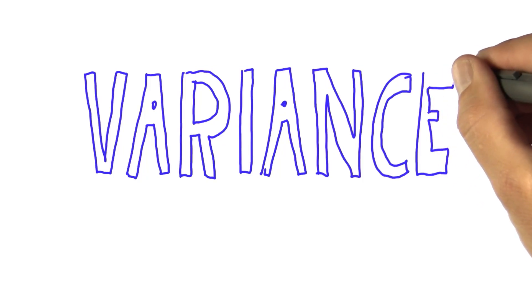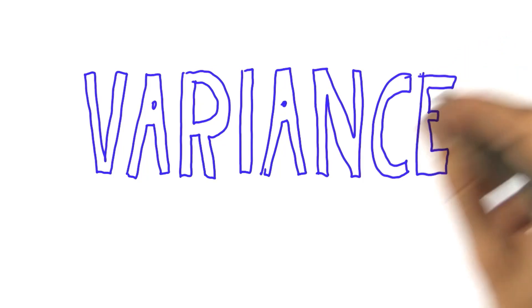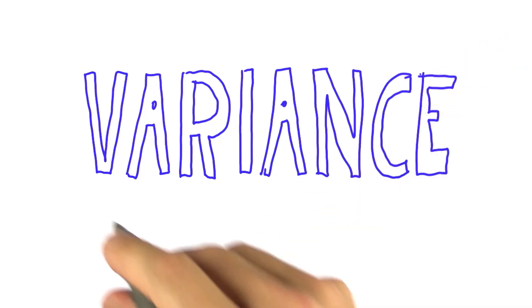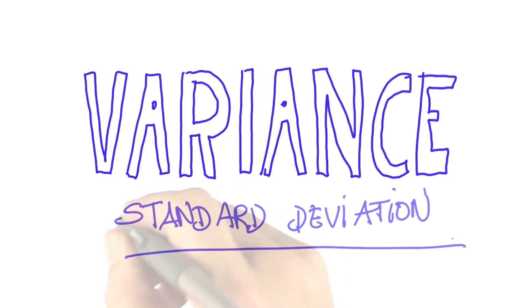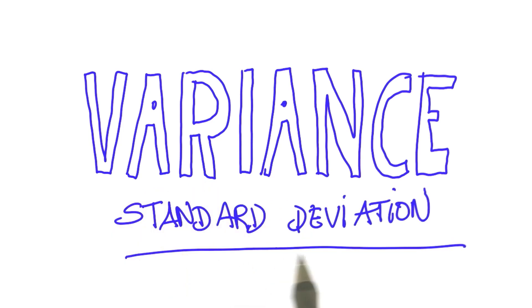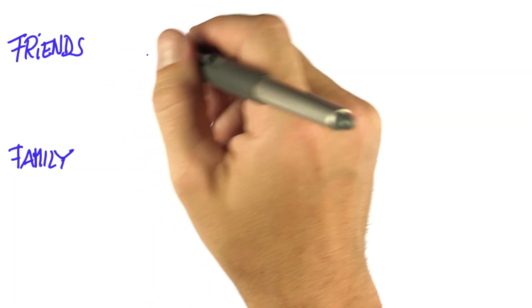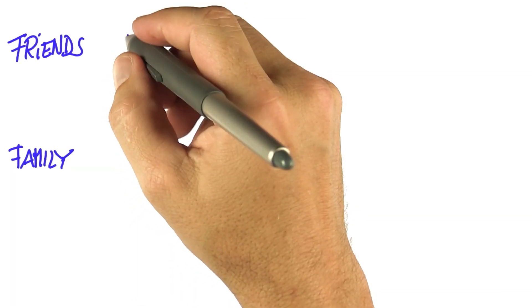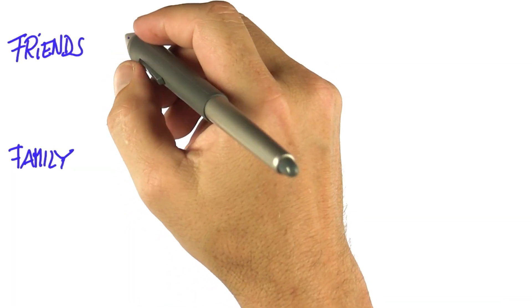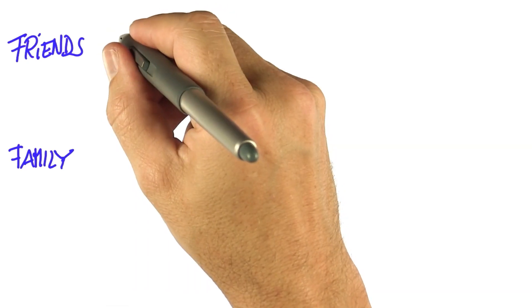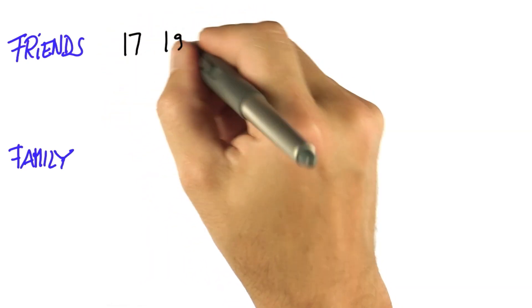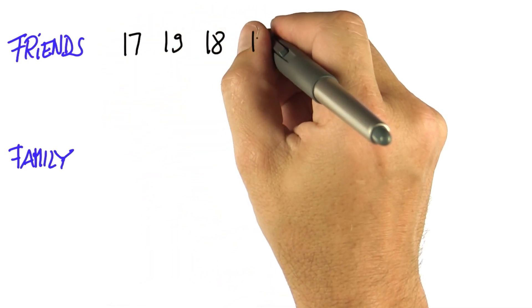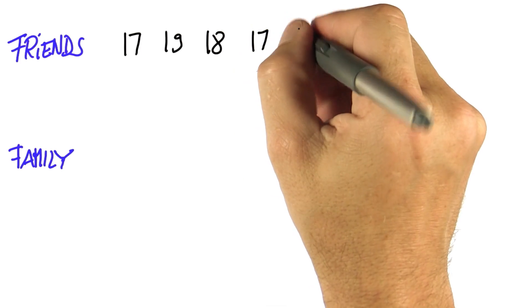This unit is all about variance and one of its very close cousins, the standard deviation. Say you are a beginning college student. Your friends might be of the following ages: 17, 19, 18, 17, and 19.